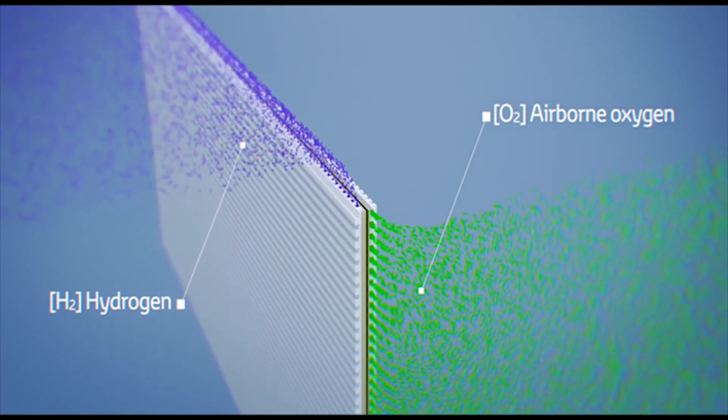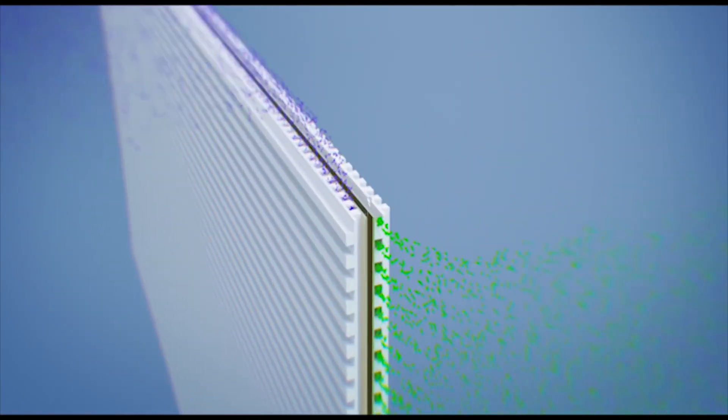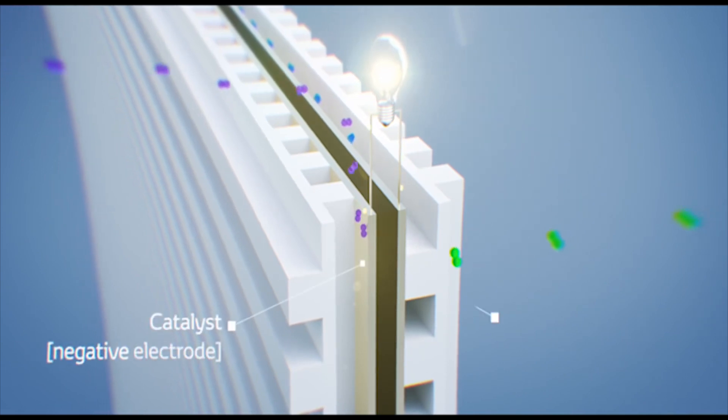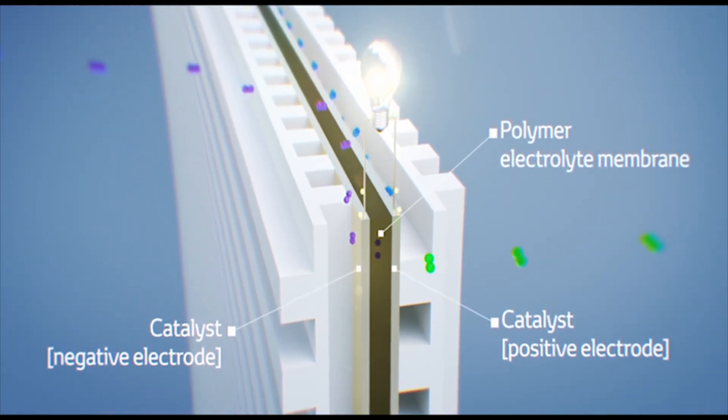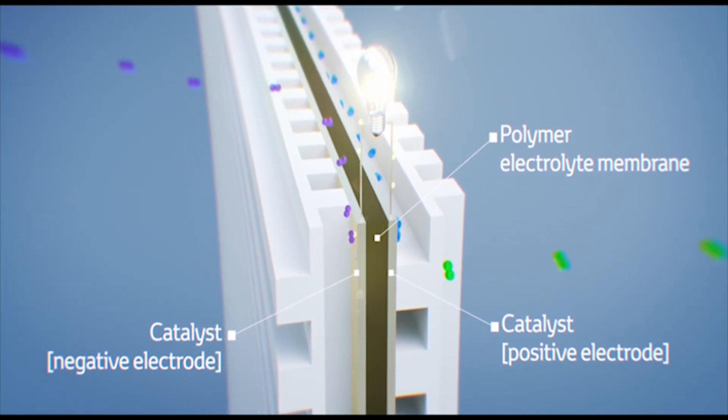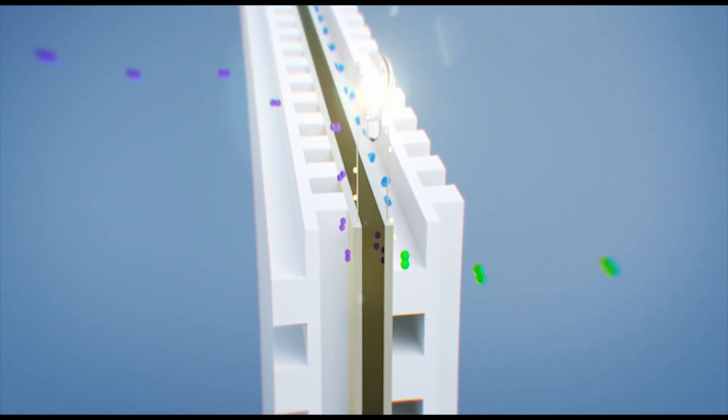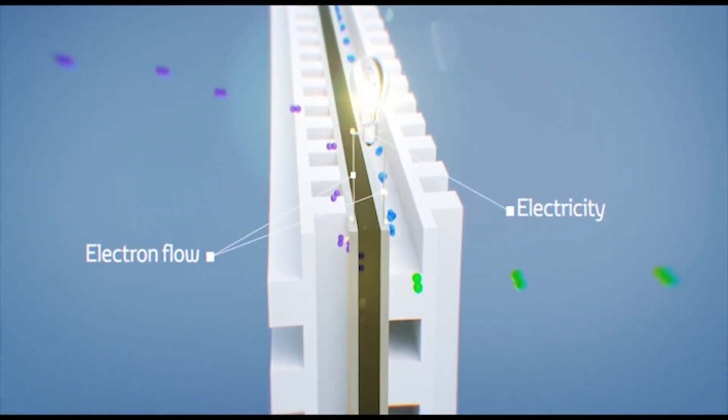These cells work differently than others by utilizing a special polymer membrane that acts as an electrolyte, to carry electrically charged particles from one electrode in the cell to the other. The cell can separate hydrogen into a proton and an electron and generate electrical power with water vapor as the only emission.